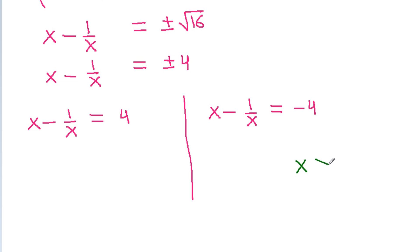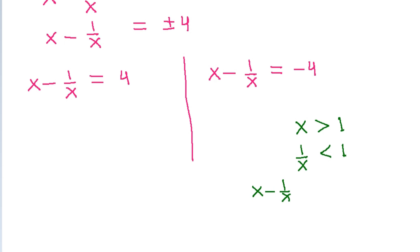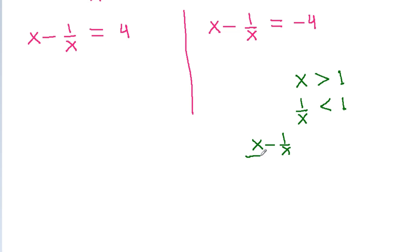Since x is greater than 1, x - 1/x will be positive. That means x - 1/x cannot be negative, so x - 1/x = 4.